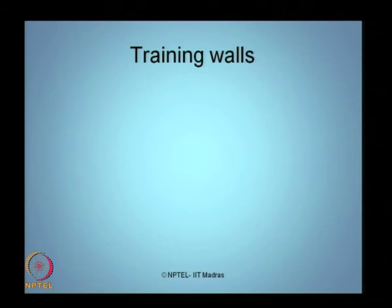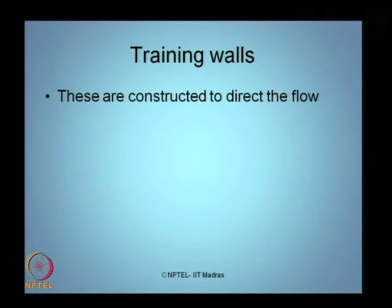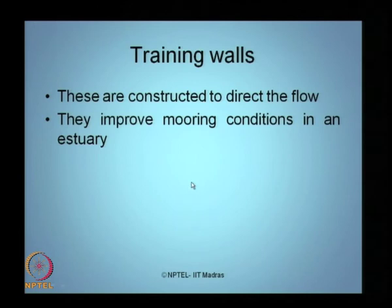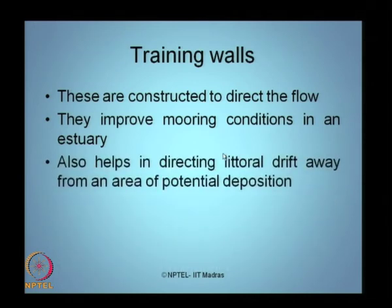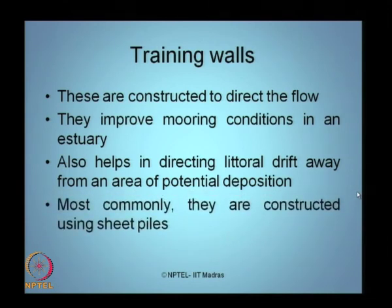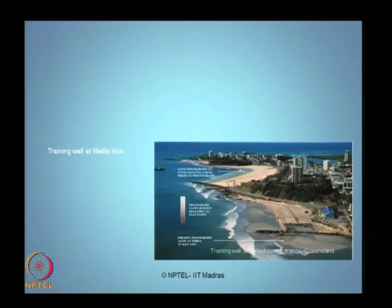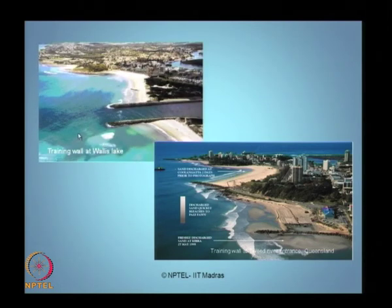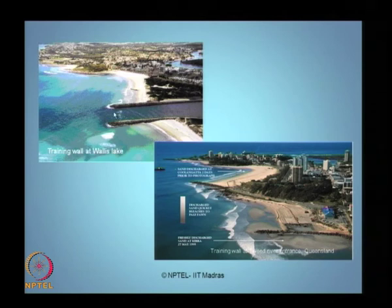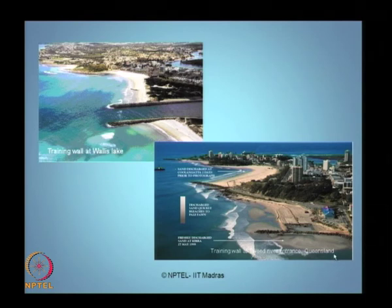The last type of coastal structure in this lecture is training walls. Training walls are constructed to direct the flow, improve mooring conditions in an estuary, and direct littoral drift away from areas of potential deposition. Most commonly they are constructed using sheet piles. The training wall at Vallis Lake and another constructed at a street river entrance in Queenstown, Australia, are shown as examples — both used for guiding flow in a smooth manner.